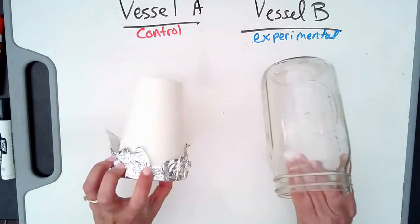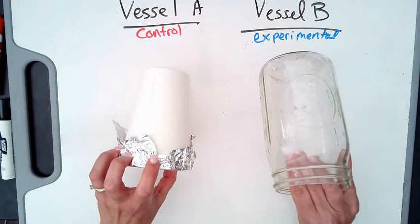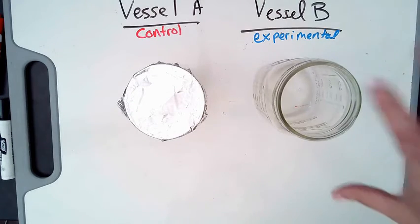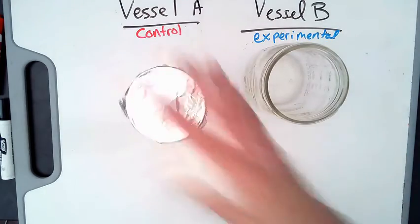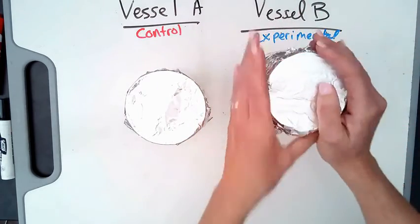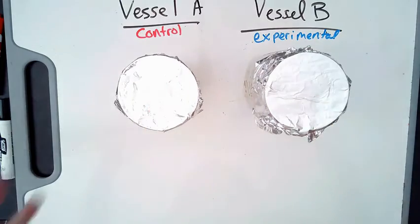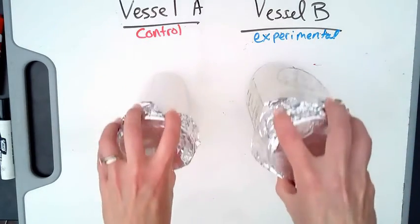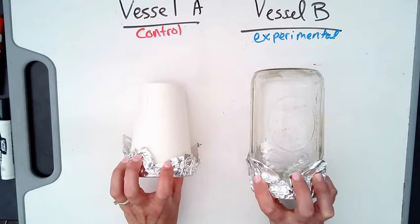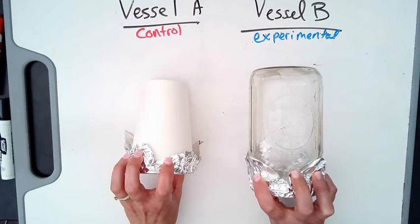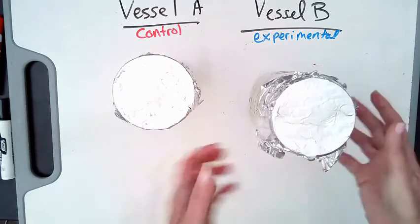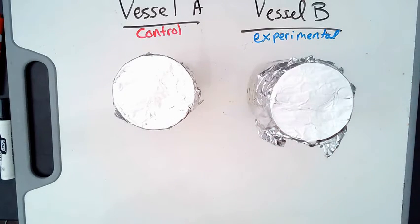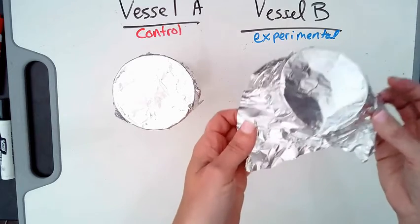Keep everything the same except for what the vessels made out of. So again, have to be the same type of lids, the same amount of water, the same starting temperature, one variable that's different. This is a paper vessel and this is a glass. Okay, so that's an example of one variable.